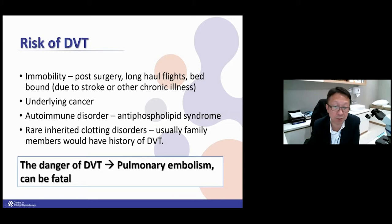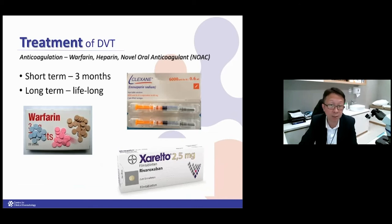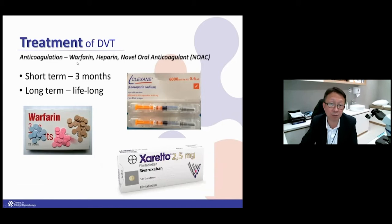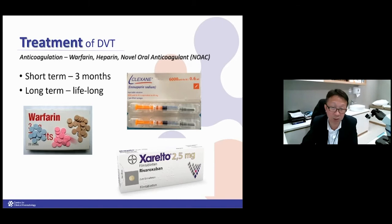Underlying cancer is also a major risk factor because cancer cells produce proteins that activate clotting. Cancer patients are also less mobile and sicker, so they have a higher risk of DVT. Other conditions leading to clotting problems include antiphospholipid syndrome and some other rare clotting disorders. The treatment for DVT is quite simple — you dissolve the clots using medicines like warfarin, heparin, or some newer agents. Most patients need about three months; some need lifelong treatment due to genetic problems or conditions that cannot be resolved.